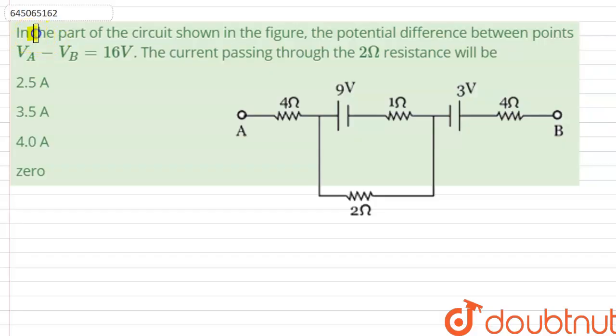Hello everyone, in the part of the circuit shown in the figure, the potential difference between points Va and Vb is 16 volts. The current passing through 2 ohm resistance will be.